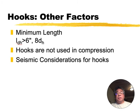Other factors - again, you're going to calculate that equation, but also 8 bar diameters and 6 inches, where I'm using H for hook, the hooked bars. The minimum has to be greater than those. So you take the maximum. You don't use hooks in compression when the steel's in compression. And there are separate seismic considerations for hooks that are beyond the scope of this class.